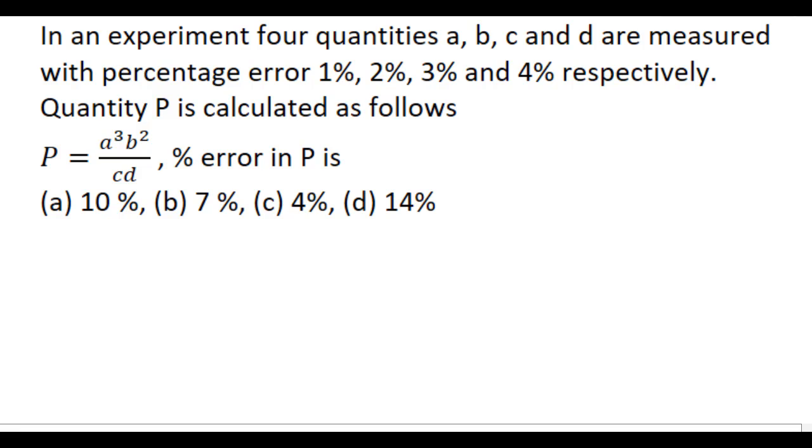In an experiment, four quantities A, B, C, and D are measured with percentage error 1%, 2%, 3%, and 4% respectively. Quantity P is calculated as follows: P equals A cubed B squared divided by CD.